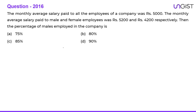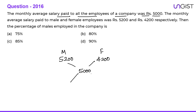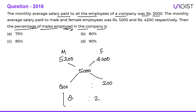The next question: the monthly average salary paid to all employees of a company was 5000. The monthly average salary paid to male and female employees is 5200 and 4200 respectively. Using allegation: the difference for males is 5200 minus 5000 equals 200, and for females it is 5000 minus 4200 equals 800. So the ratio comes out as 800 is to 200, which is 8 is to 2.